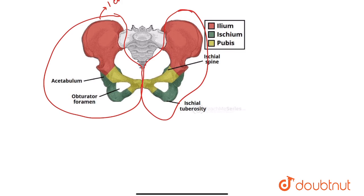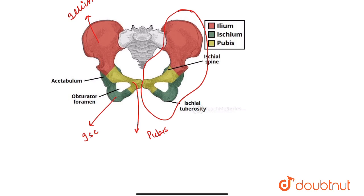See these two coxal bones. This red part, this red structure, is the ilium part, and this yellow structure is the... sorry, this yellow structure is the pubis part, and this green part is the ischium. So one coxal bone is formed by the fusion of ilium, ischium, and pubis.